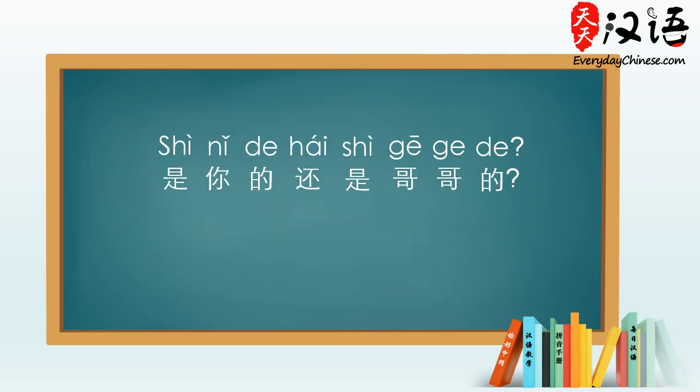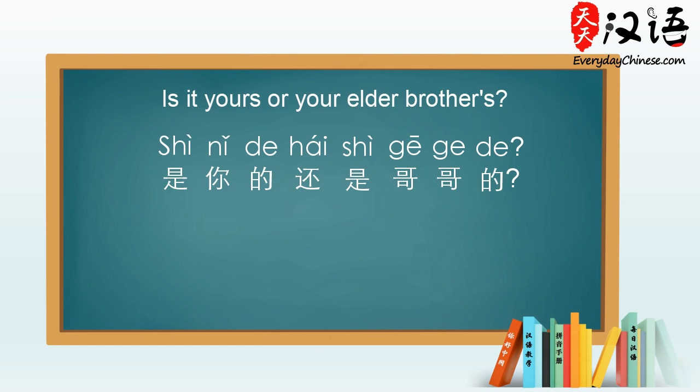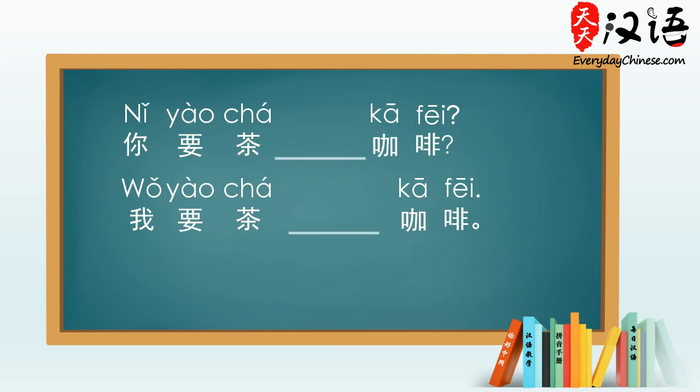是你的还是哥哥的? — Is it yours or your elder brother's? In lesson 25, we introduced the word 还是. Do you still remember which one we should use for a question and which one for a statement? We should use 还是 in a question and 或者 in a statement. Did you get it right?